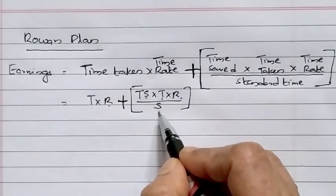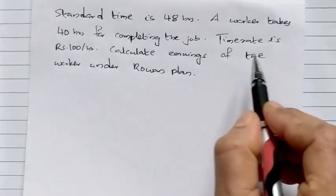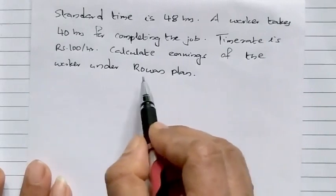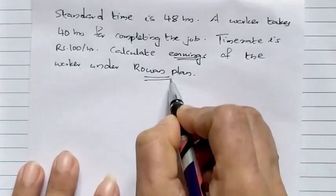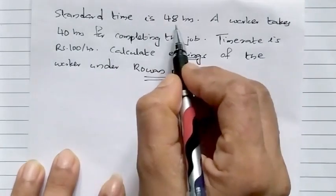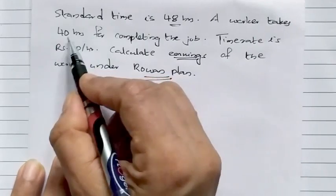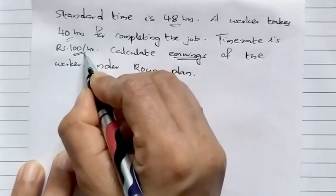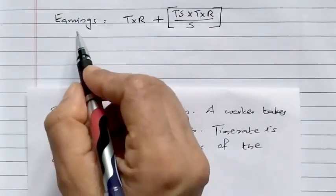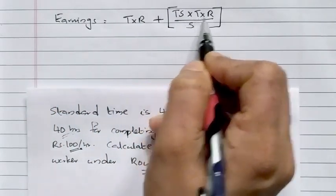Problem: Standard time is 48 hours; a worker takes 40 hours for completing the job; time rate is Rs. 100 per hour. Calculate earnings of the worker under the Rowan Plan. Earnings = T × R + (Ts/S) × T × R.